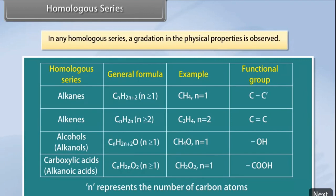In any homologous series, a gradation in the physical properties is observed. This gradation occurs due to the increase in the melting points and boiling points along with increasing molecular mass of the compound.